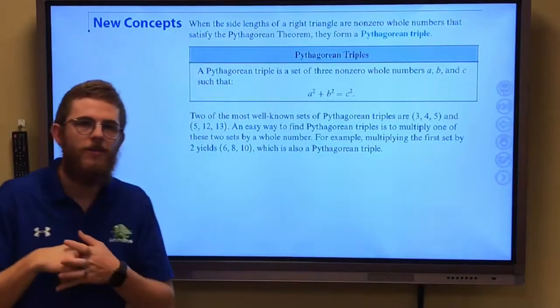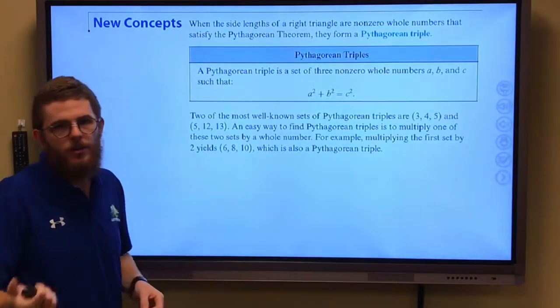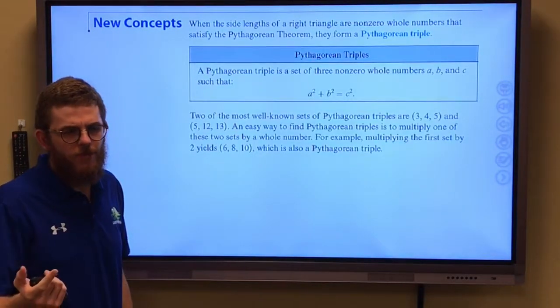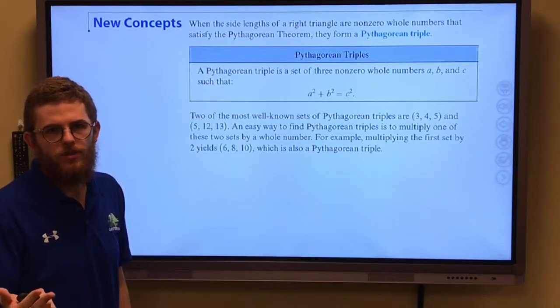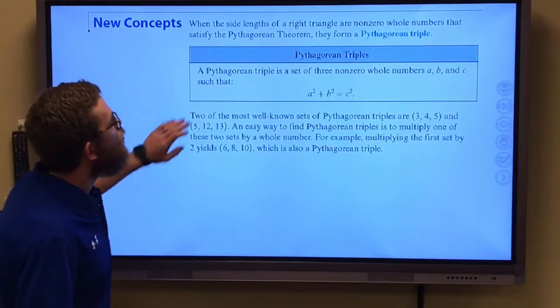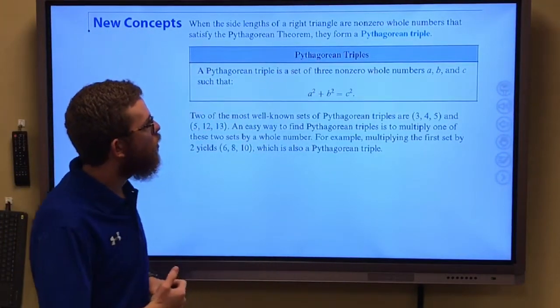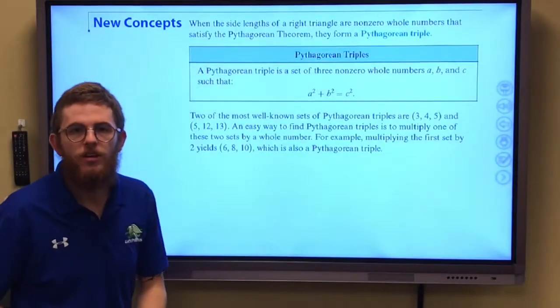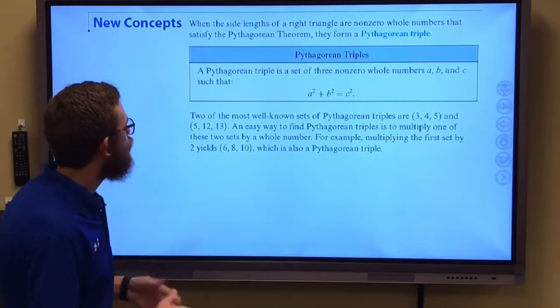Today we're talking a little bit more about Pythagorean Theorem, and one thing that you may have heard before is called Pythagorean Triple. It says that whenever we have non-zero whole numbers that satisfy Pythagorean Theorem, we consider it a Pythagorean Triple.